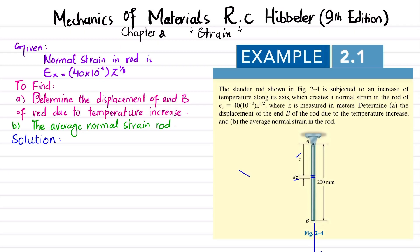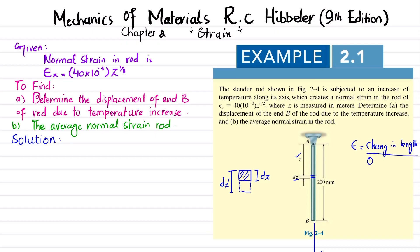Let me draw this small portion, which is dz. Due to the increase in temperature there will be a change in length of this small portion dz. Let the new length be dz_dash. We know that strain is equal to change in length divided by original length, so change in length equals strain times original length. Since the original length is dz, this gives us the change in length.